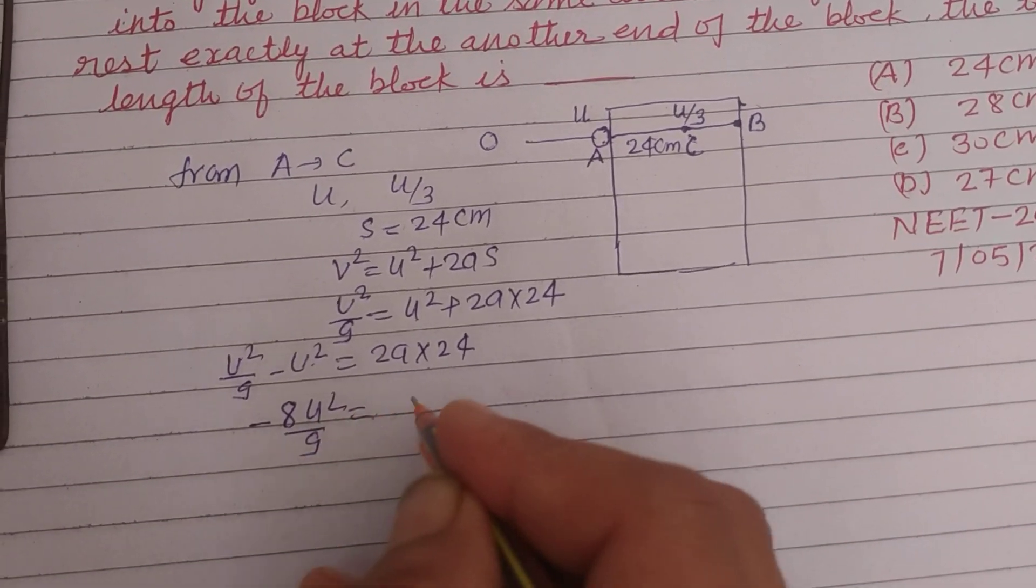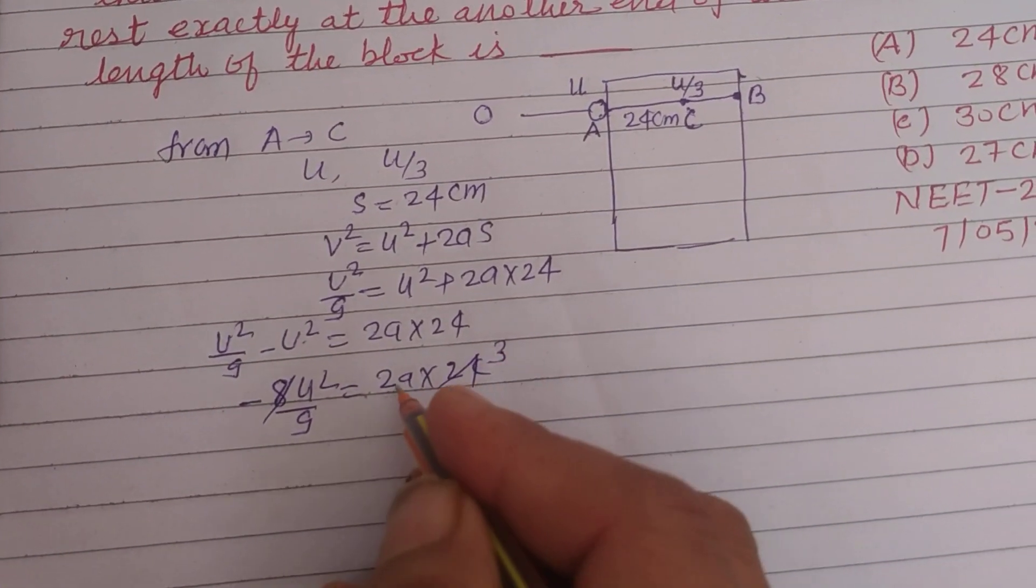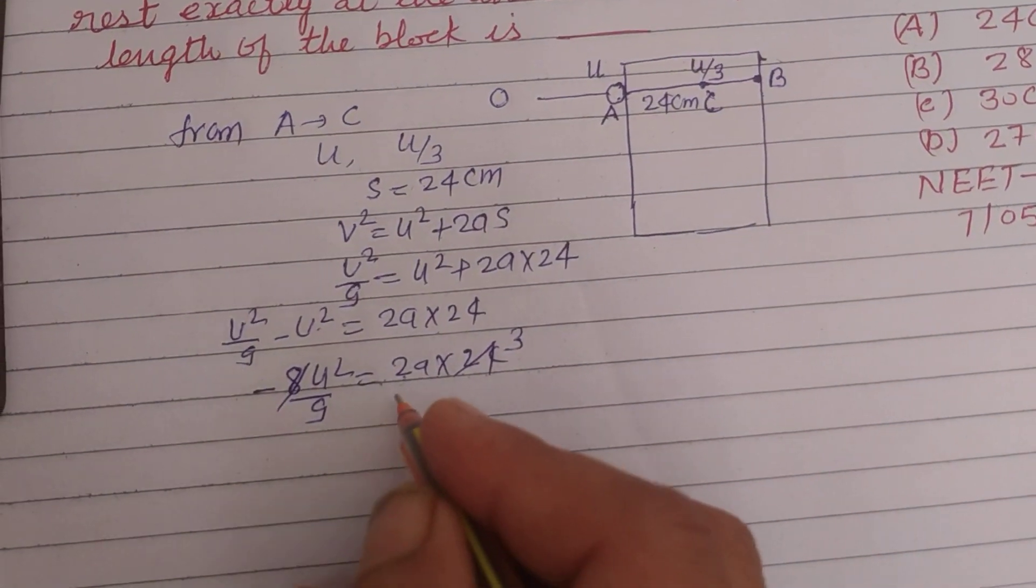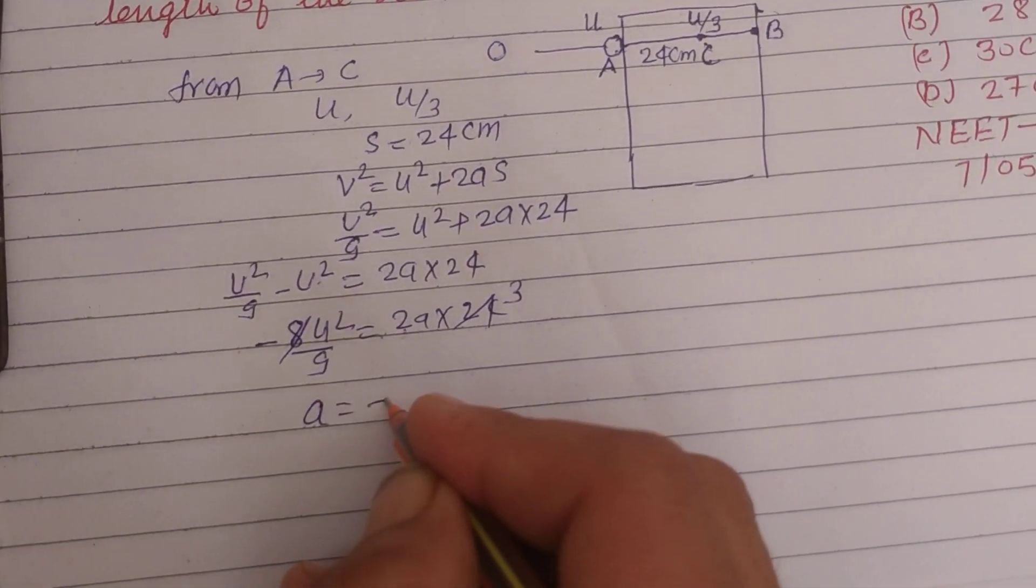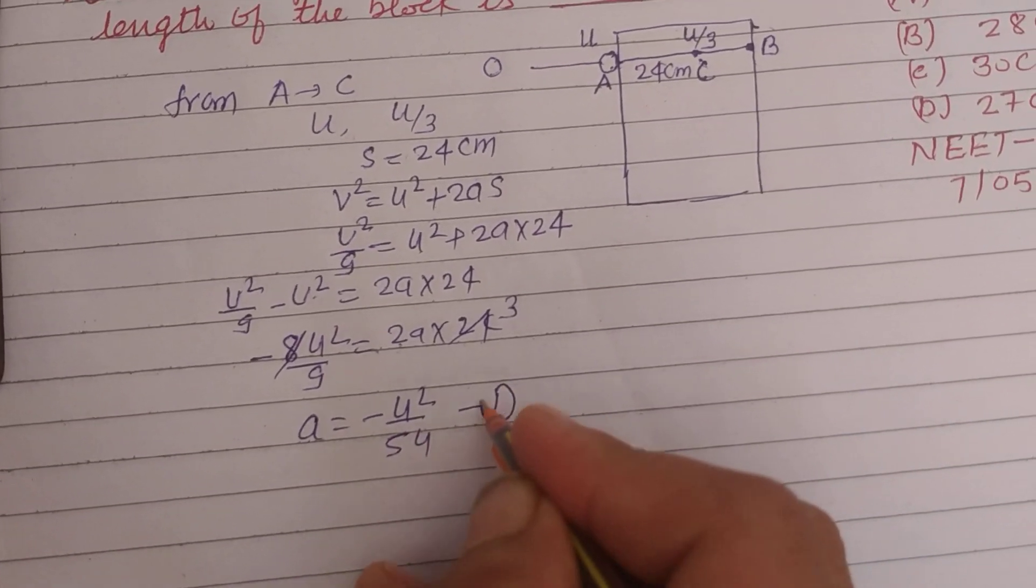So this is negative 8U² upon 9 equals 2a into 24. Through calculation we get 54, so a is minus U² upon 54. This is our first equation.